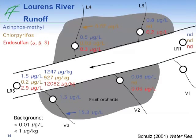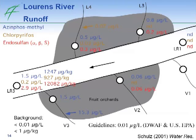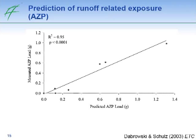When we did that, we found very high concentrations in many tributaries and mainly at the outlet of the Lawrence River at site LR3 — concentrations up to 1.5 or 2.9 microgram per liter in the water and up to 12,000 microgram per kilogram in the sediment. These are really very high concentrations compared to the background, and they exceed the guidelines existent in South Africa by a very high factor. We compared these runoff measurements with a runoff model, and once again found a pretty good relationship between measured data on the y-axis and predicted data on the x-axis.